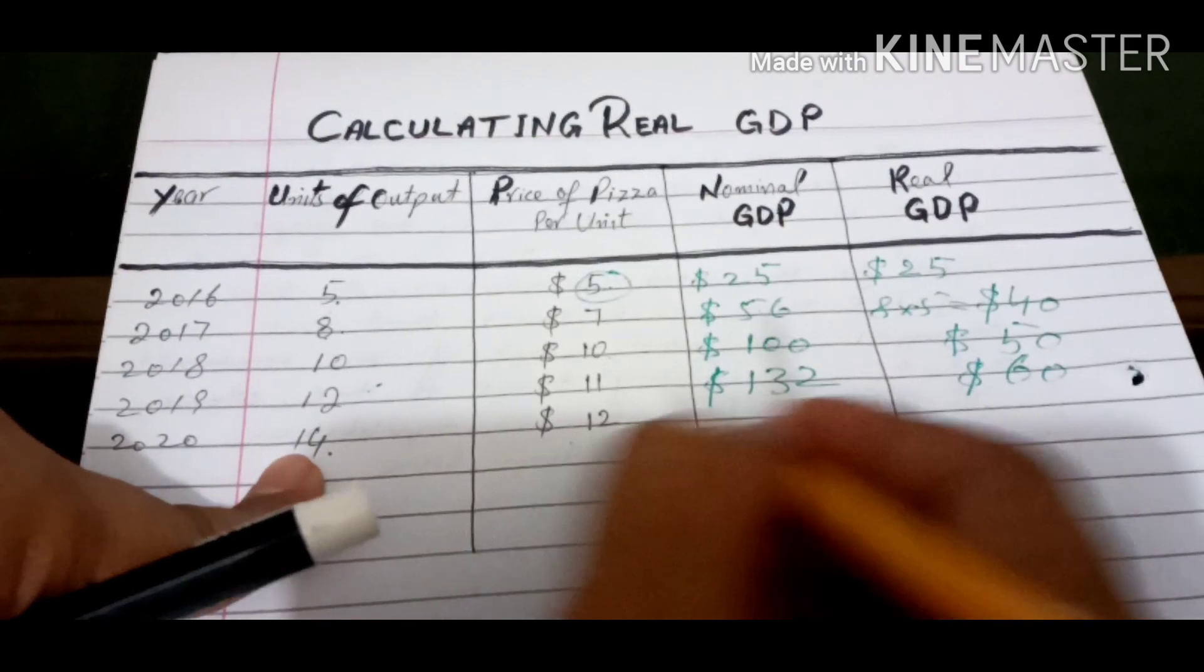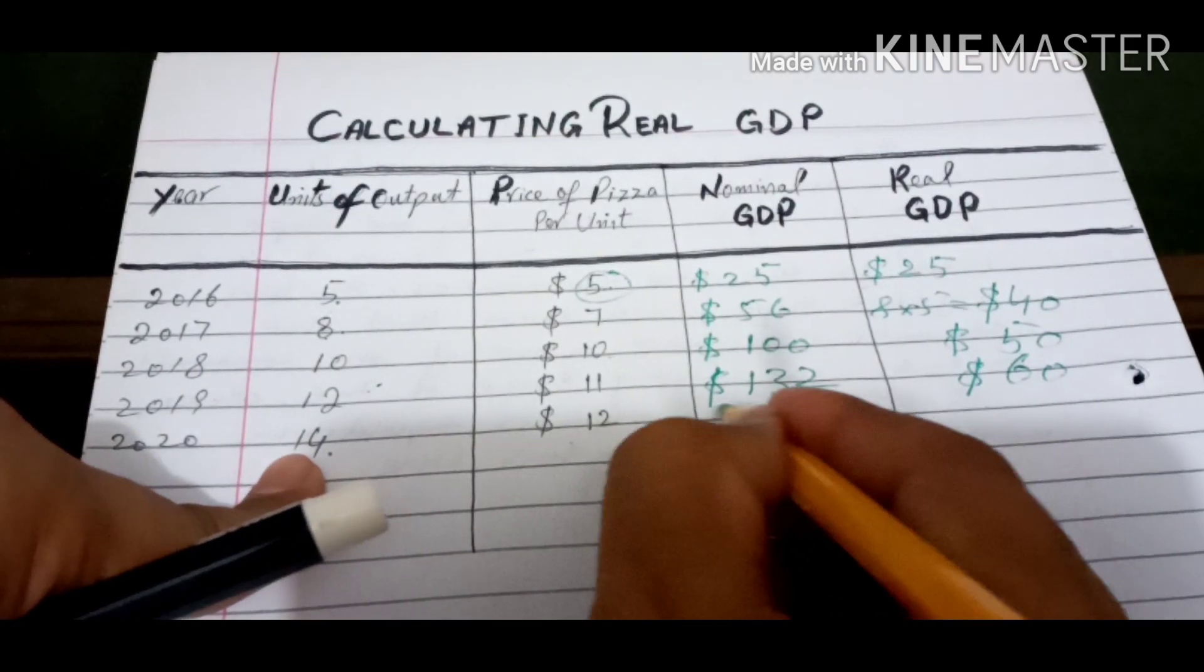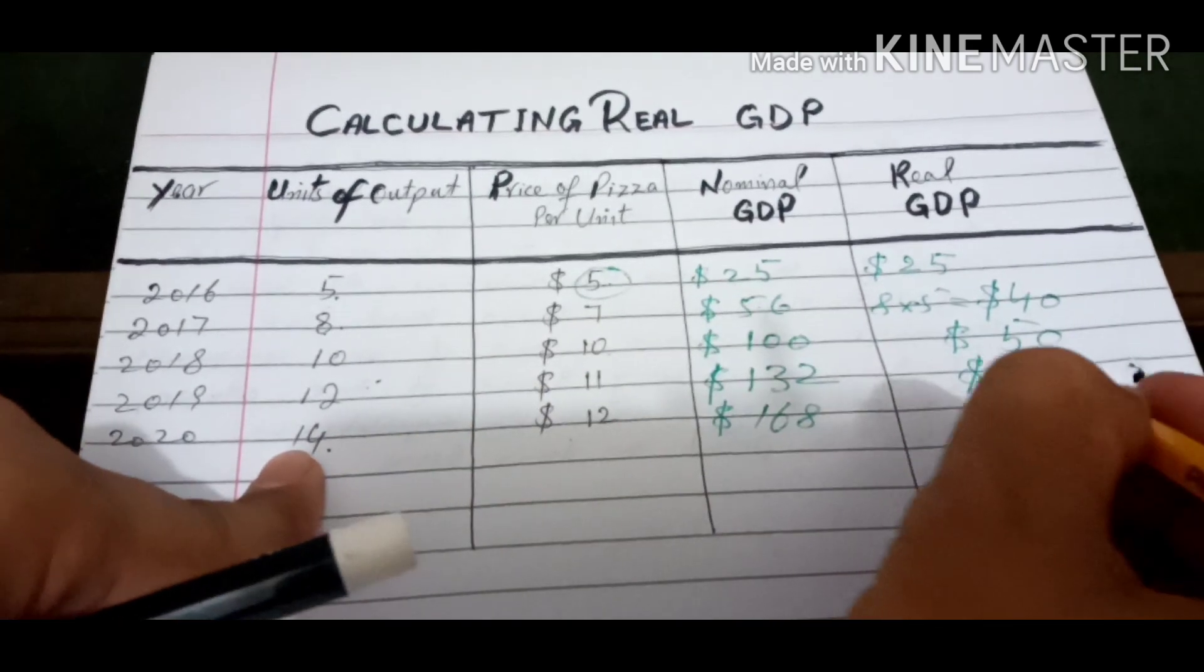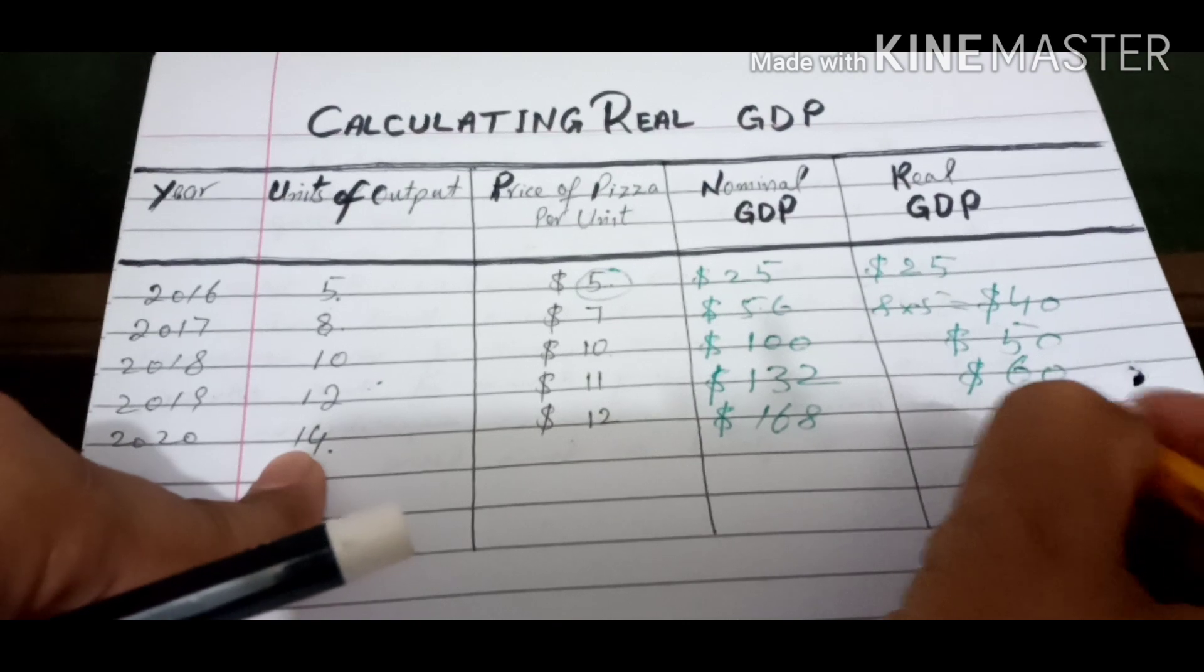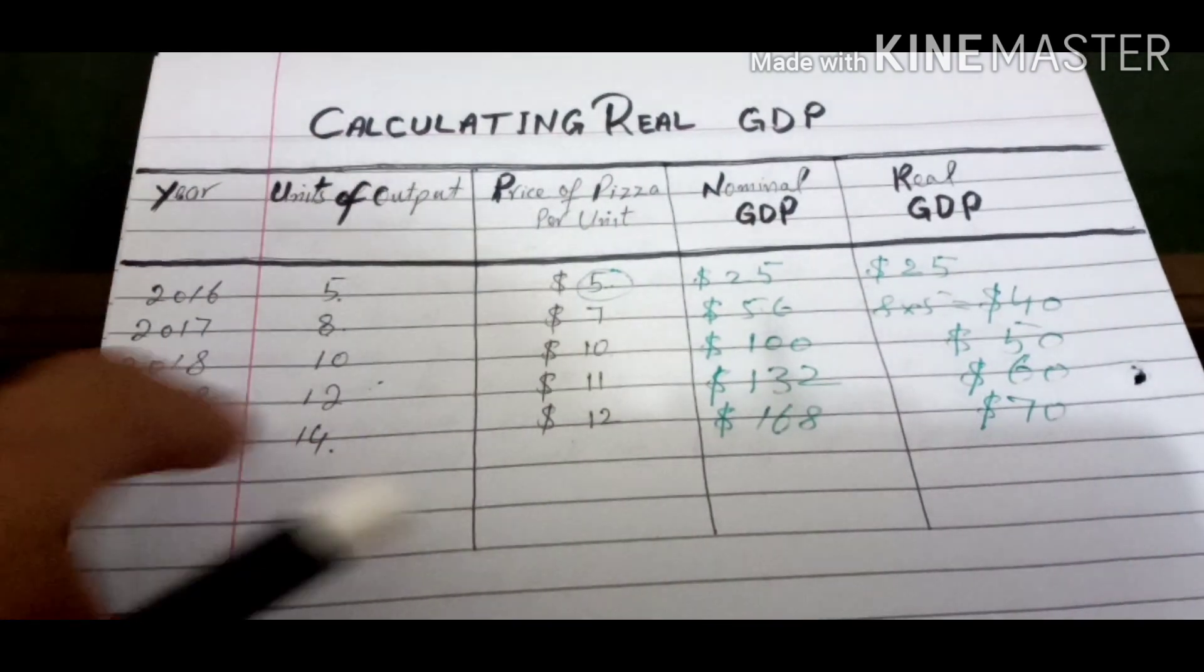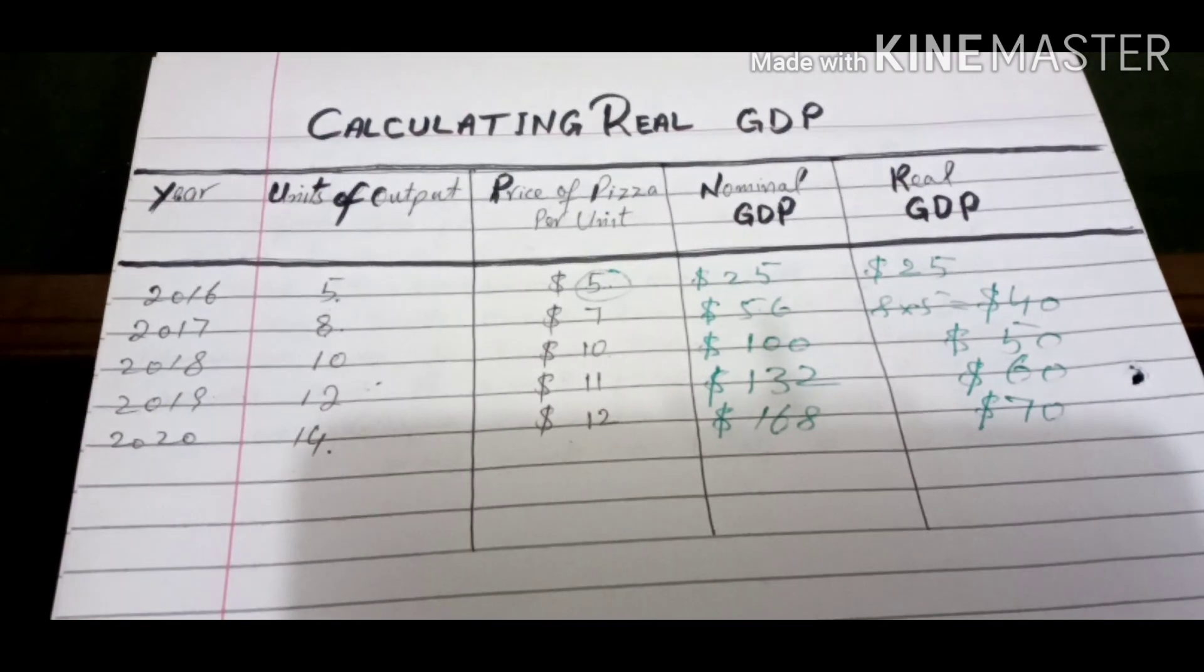$168 is nominal GDP. And if we find real GDP, 14 multiplied by base year price will be $70. So this is the way nominal GDP and real GDP are calculated.